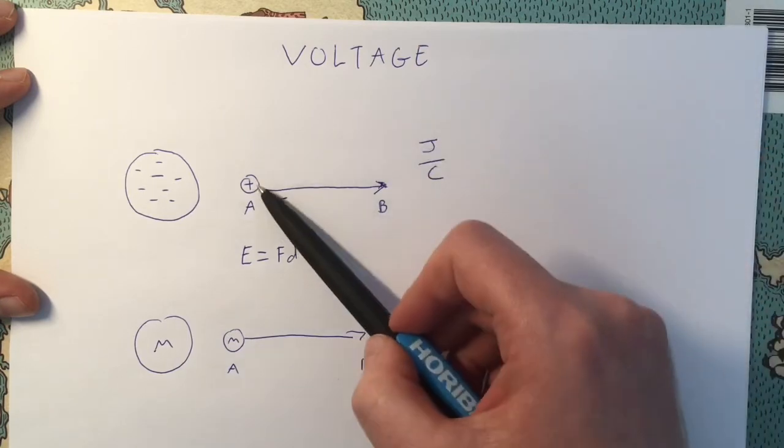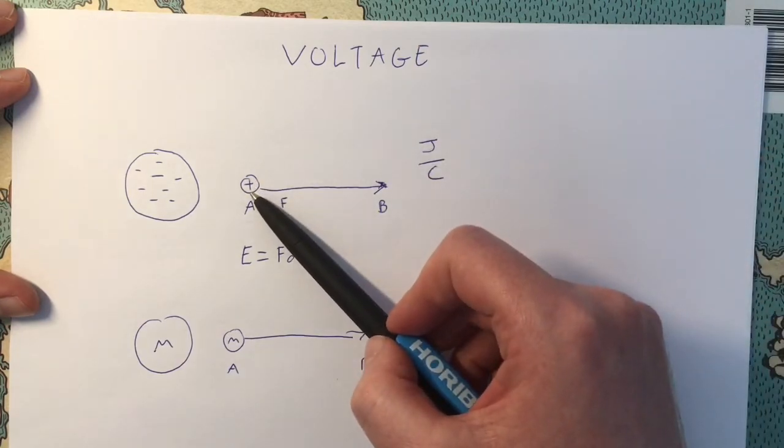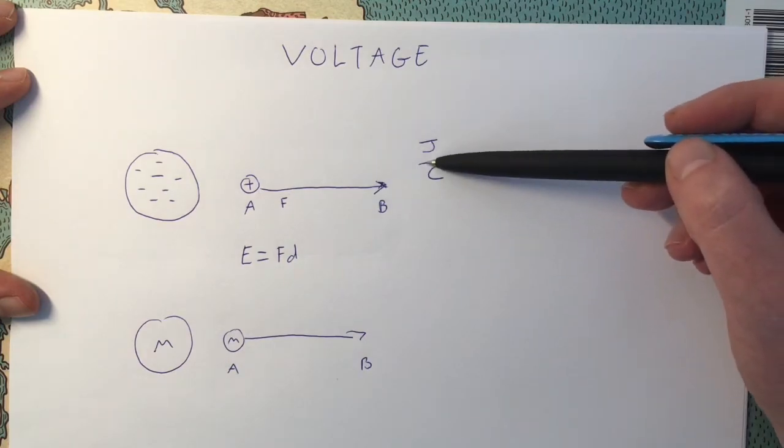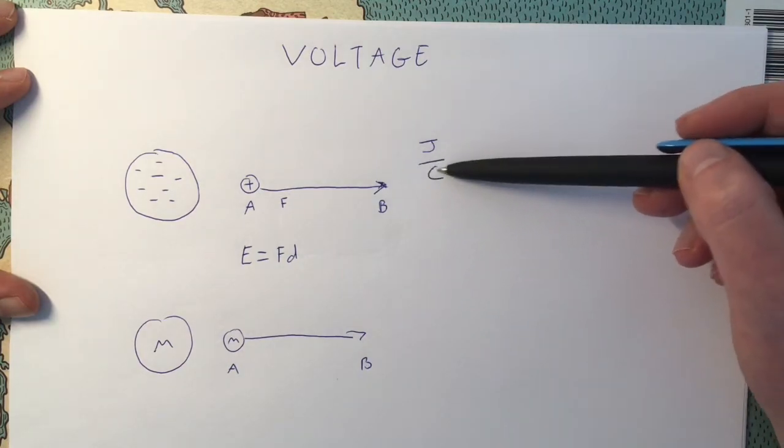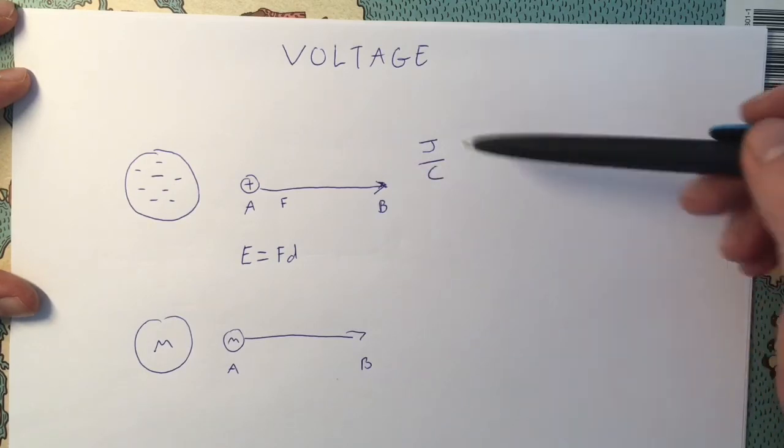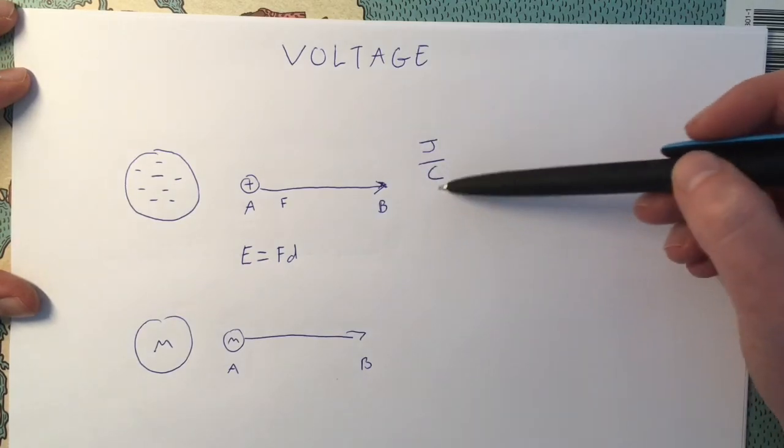Here we're just thinking about an individual charge, whereas in voltage, it's this unit coulomb, which is our 6.25 times 10 to the 18 electrons.